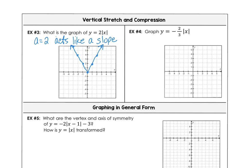Here we've got an a value that is negative 2 thirds. This reflects across the x-axis, and that 2 thirds behaves like a slope. The origin is the vertex. If you go down 2 and right 3, or down 2 and left 3, you get that vertical compression.